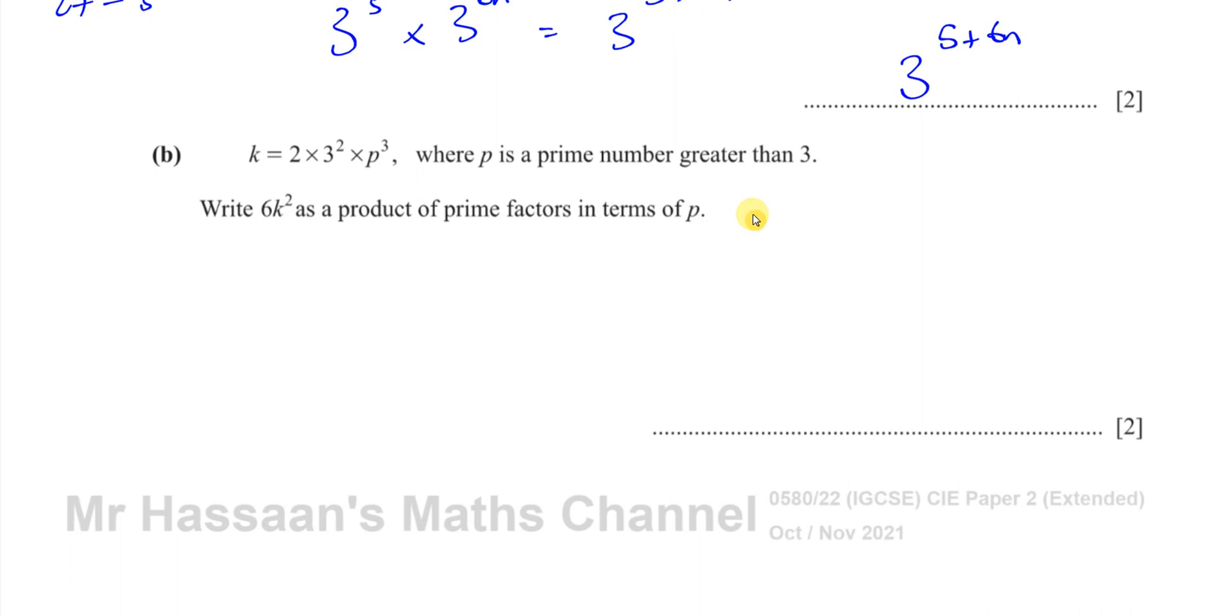Part b says k equals 2 times 3 squared times p cubed, where p is a prime number greater than 3. It says write 6k squared as a product of prime factors in terms of p.